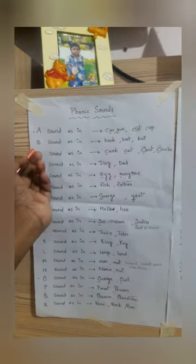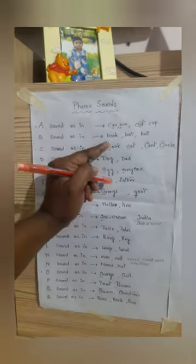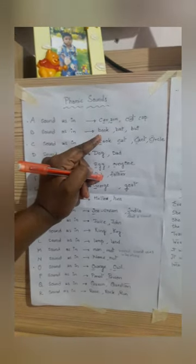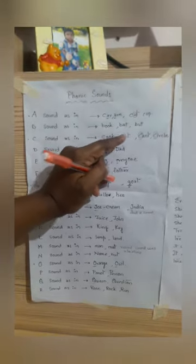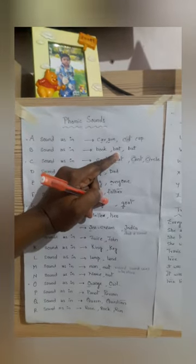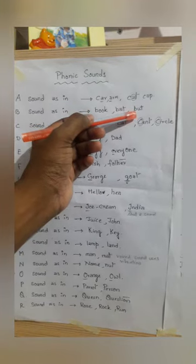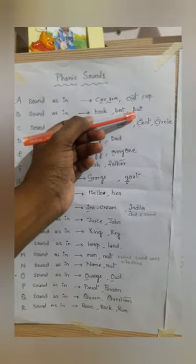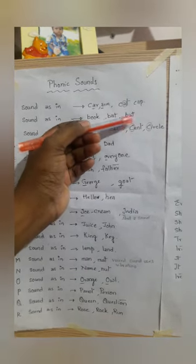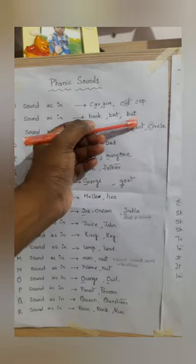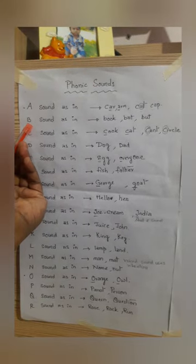Now coming to the letter B, it has only one sound which is 'b' as in book, 'b' as in bat, and 'b' in the word but — B, U, T — but. So the sound of the letter B is 'b'.